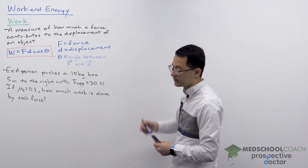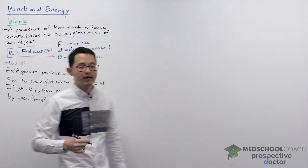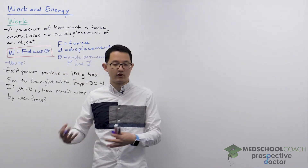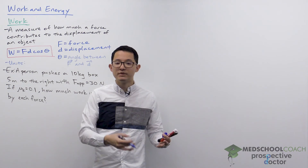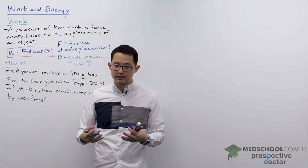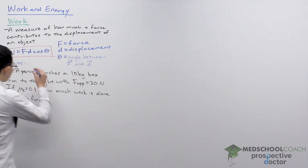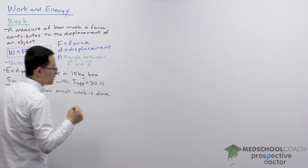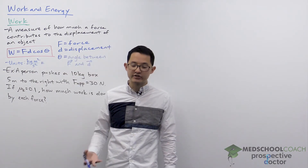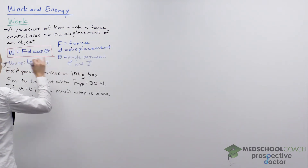From this equation, we're able to determine the units for work — it's the units of force times the units for displacement. The units for force is a Newton, which comes from F = ma: mass is kilograms, acceleration is meters per second squared, so a Newton is a kilogram meter per second squared. Displacement is in meters, so the units for work is kilogram meter squared per second squared. This is the same as kinetic energy and potential energy, so work also has units of joules.